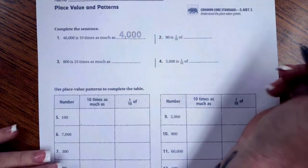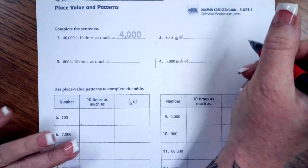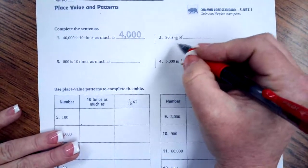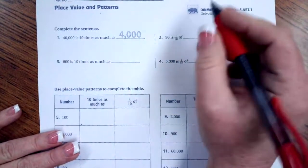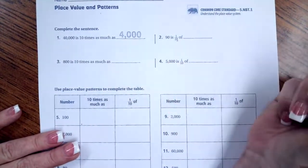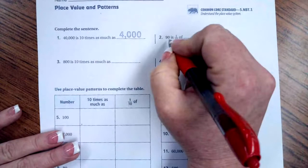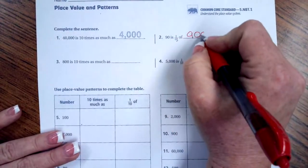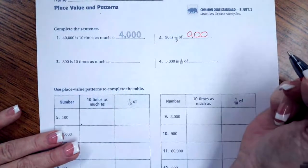Number 2 says 90 is 10 times of what? So what we want to do is decide what we had to divide by 10 to get 90. So, 10 has one zero. I'm going to add a zero to 90. So I'm going to put my original 90, and then I'm going to add one zero because 10 has one zero.